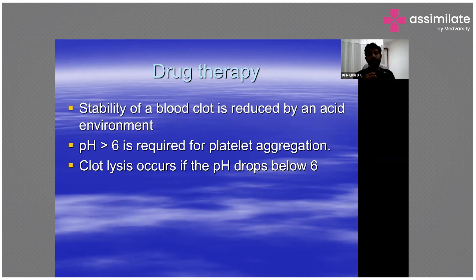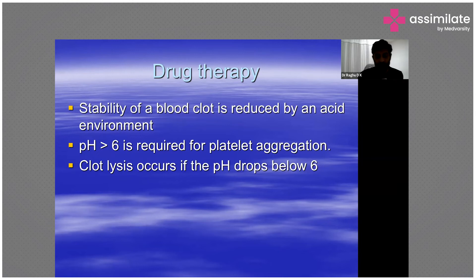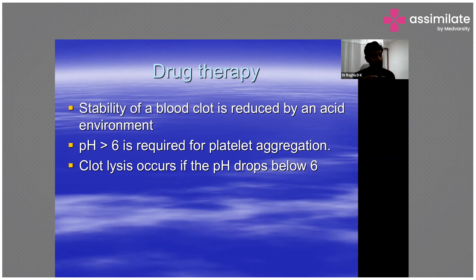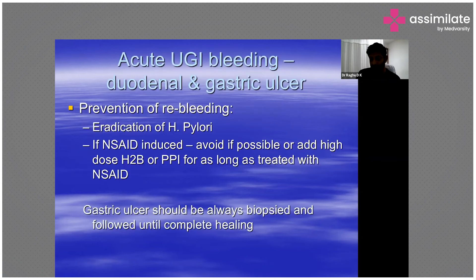PPIs help because clot stability is reduced in an acid environment. A pH greater than 6 is required for platelet aggregation, and clot lysis usually occurs if the pH drops below 6. PPIs raise the pH to facilitate platelet aggregation and clot formation.